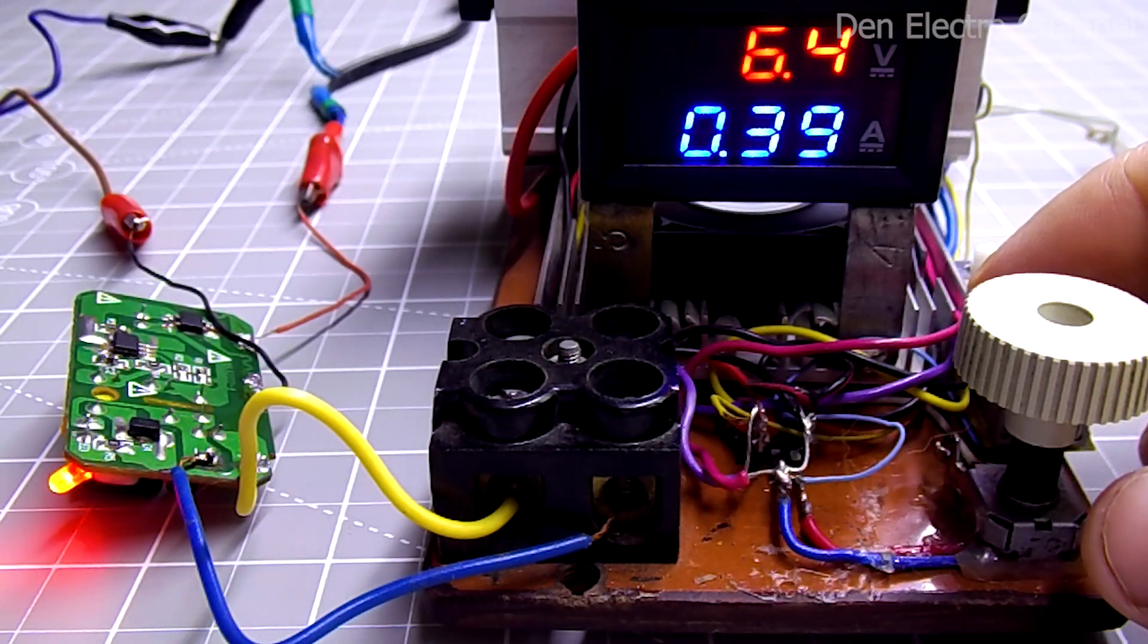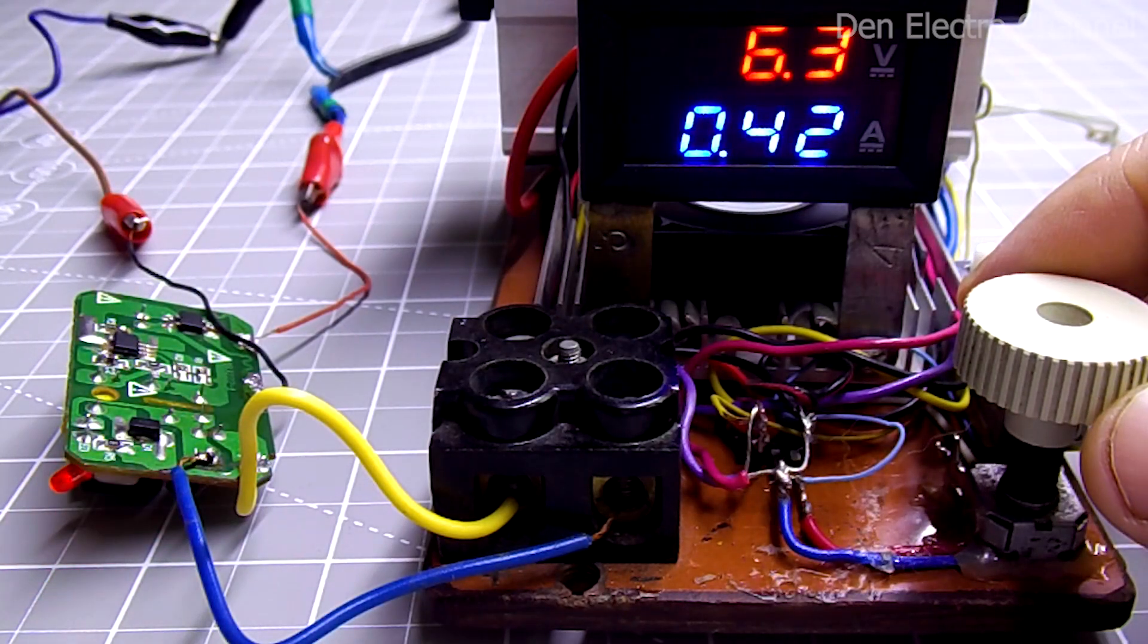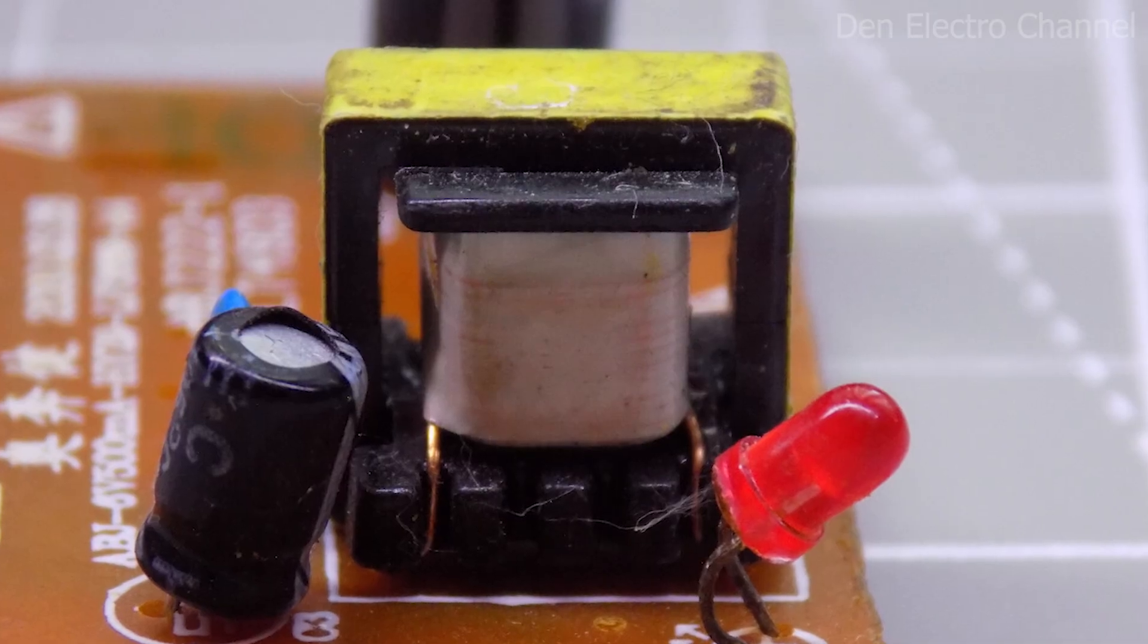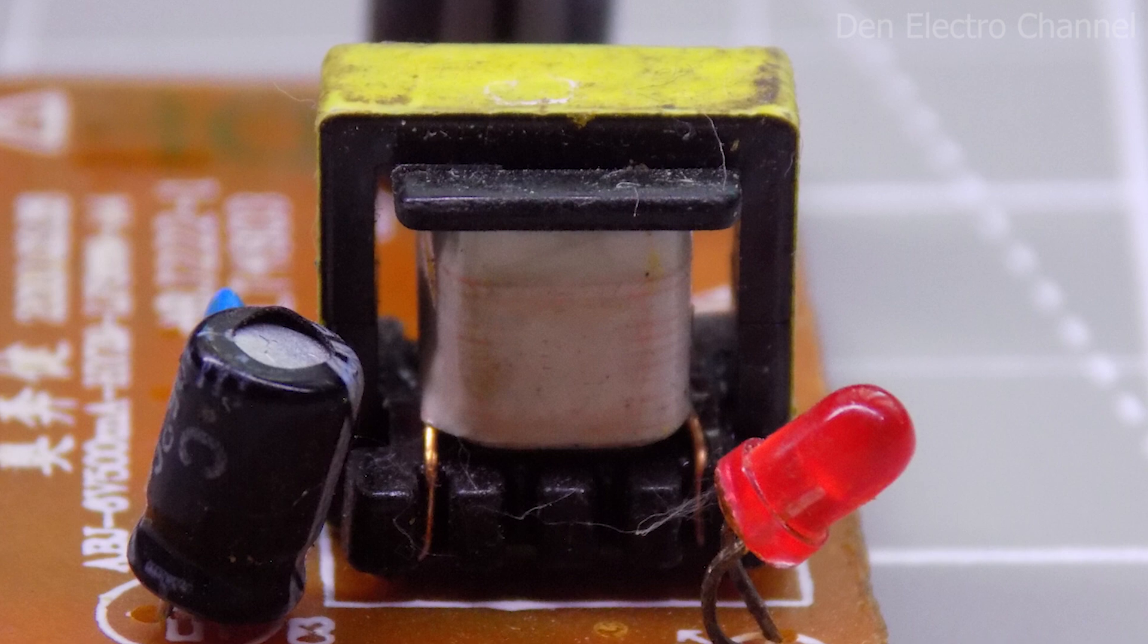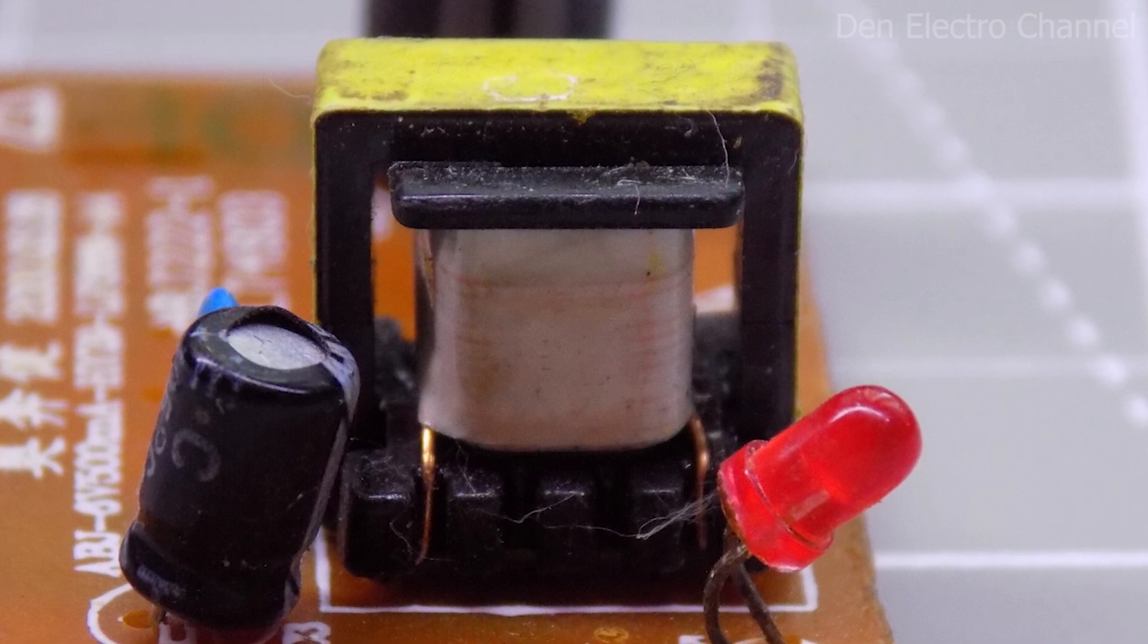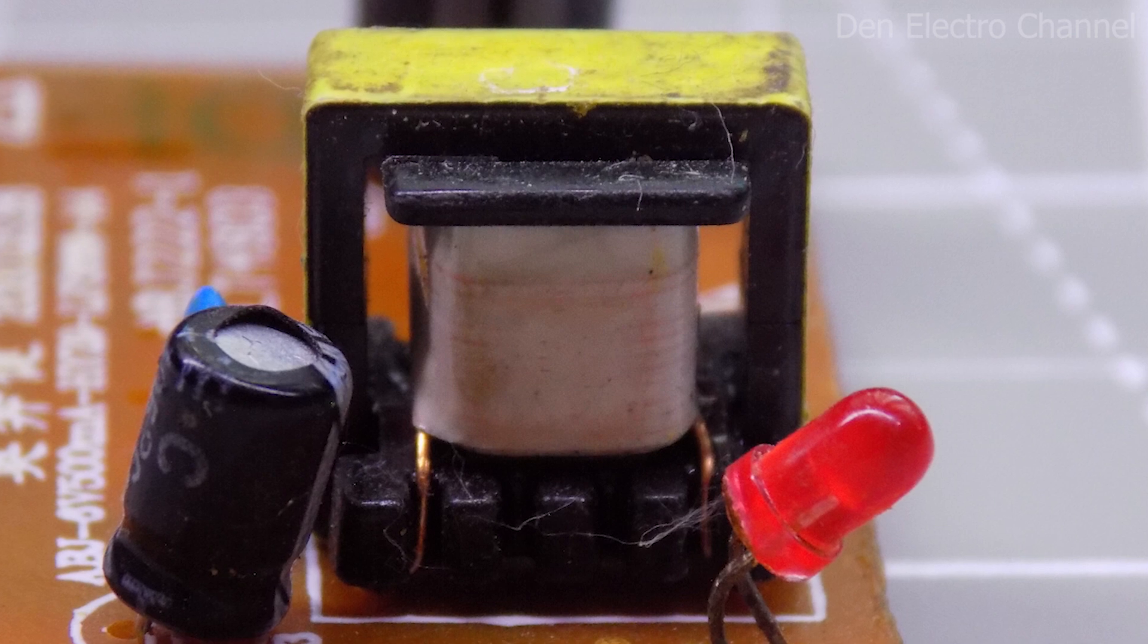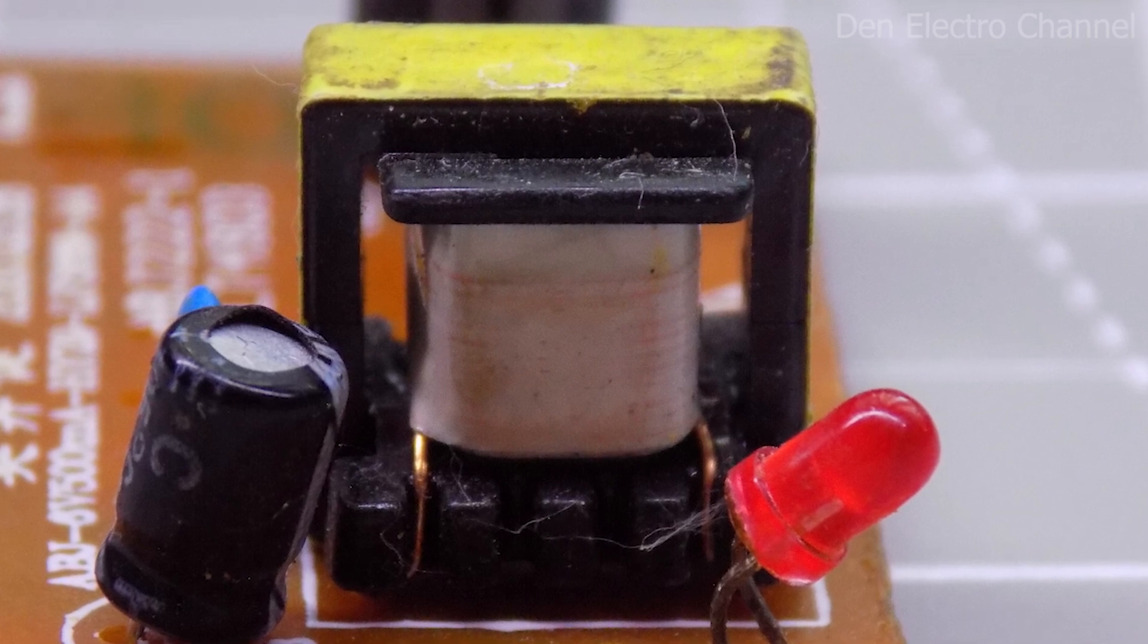With a further increase in power, the voltage begins to sag. The transformer for this power supply looks like this. There is a lot of empty space in the transformer window, so I decided not to disassemble the core. The new secondary winding should fit.